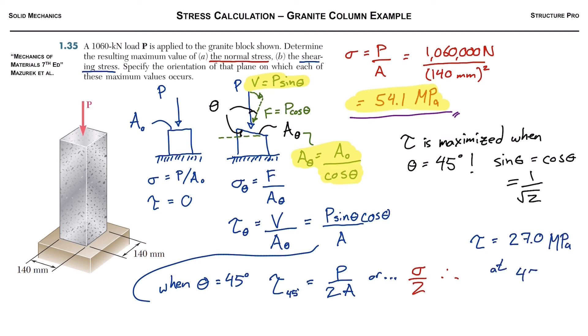So we can just divide our answer from part A divided by 2. We get 27 MPa and we're at 45 degrees.